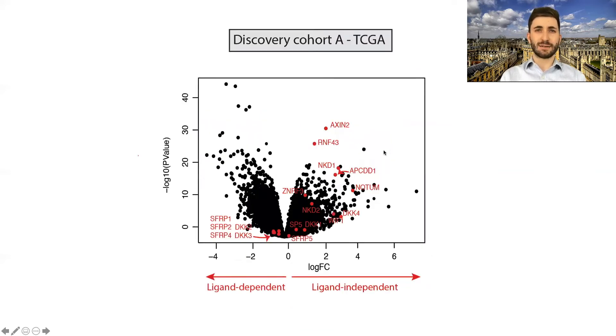Our differential expression analysis and publicly available cohorts of colorectal tumours shows that negative regulators are markedly enriched in ligand-independent versus ligand-dependent tumours, with Axin2 showing a very significant differential expression between these tumour groups.